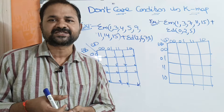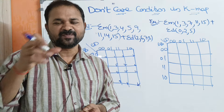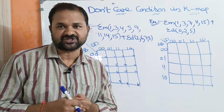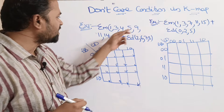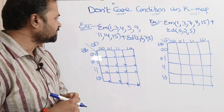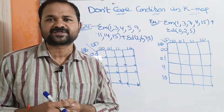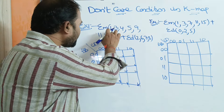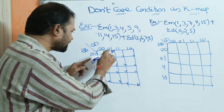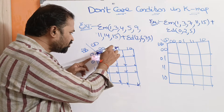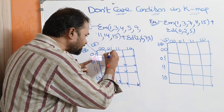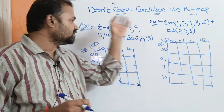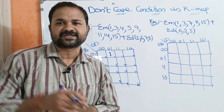Minterm means product operation, performed on the literals or variables. So sigma M specifies sum of products operation. The minterms are given. For the corresponding minterms, we have to write 1 in the Karnaugh map. For example, minterm 1 means the input combination 0,0,0,1 — for this combination the output is 1. All these minterms specify that for those combinations, the output is 1.